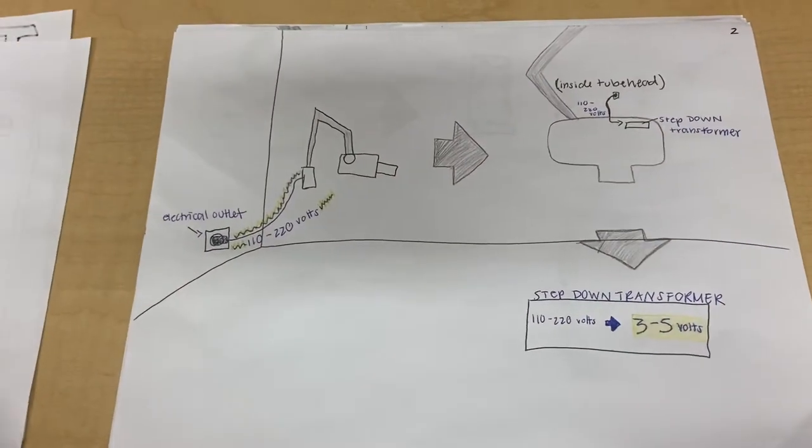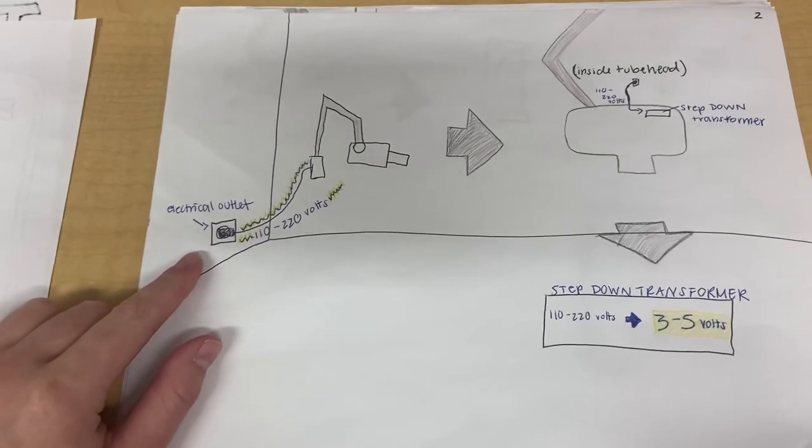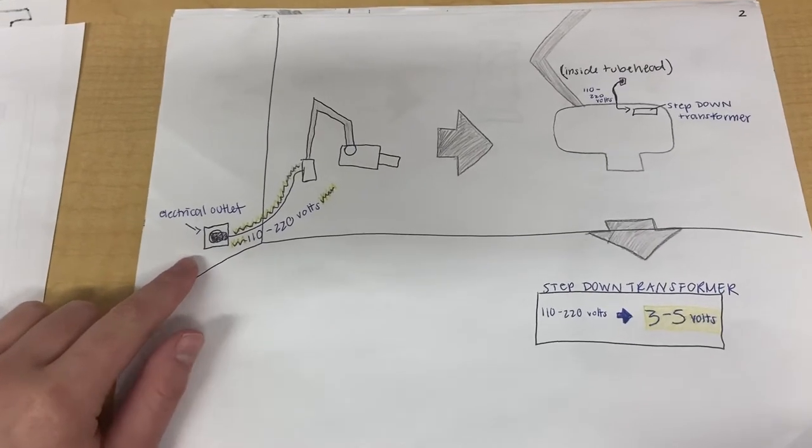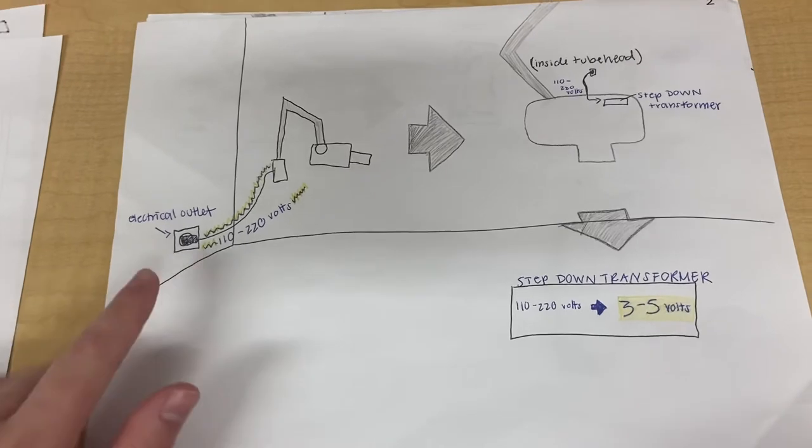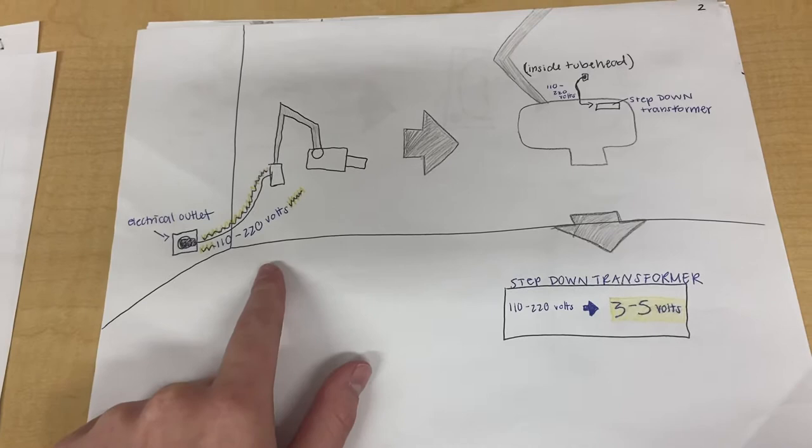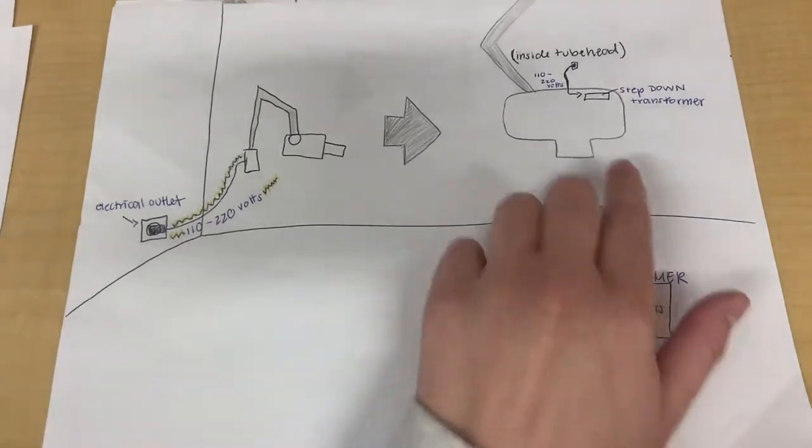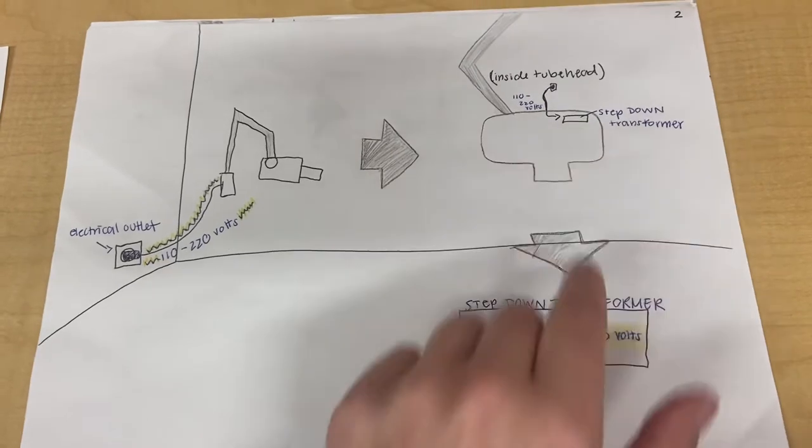Alright, so first off, the X-ray machine will be plugged into the wall, and when it is turned on, the electricity will travel from the outlet to the X-ray machine as 110 to 220 volts. Because the machine doesn't need that many volts yet, it will actually enter the step-down transformer.